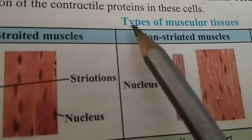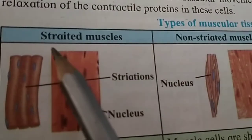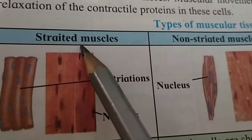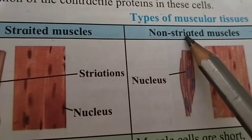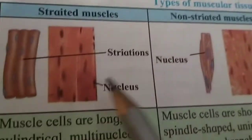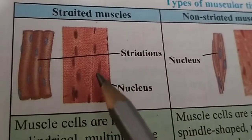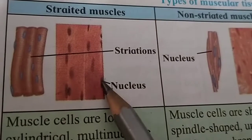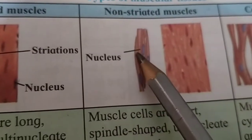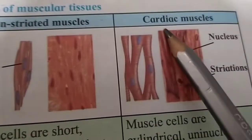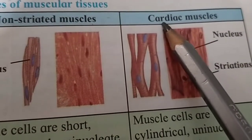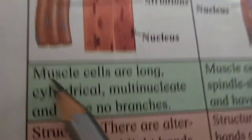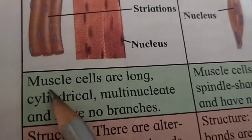So let us see the types of muscular tissues. There are three types: striated muscles, non-striated muscles, and cardiac muscles. The striated muscles have striations, and this is the nucleus. Next we have cardiac muscles.